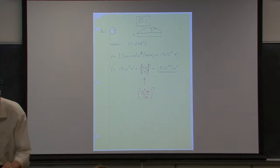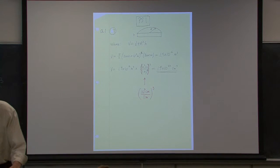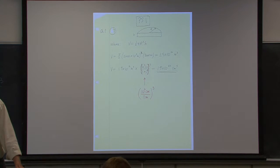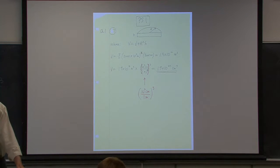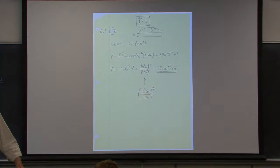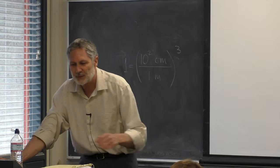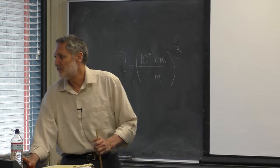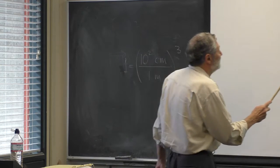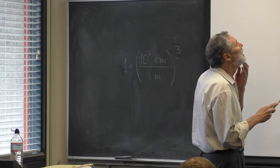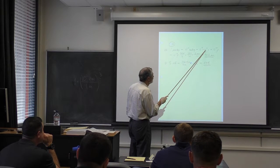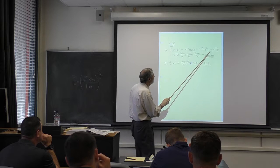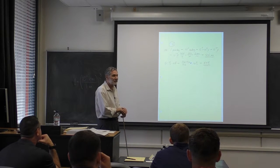The next problem is number 12: a 50-minute lecture period is close to a micro-century. How long exactly is a micro-century in minutes? A micro-century is a millionth of a century, and a century is 100 years, so a micro-century is 10⁻⁴ years. We want to convert that to minutes.